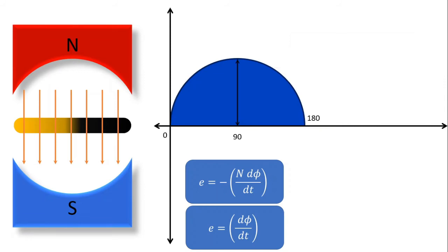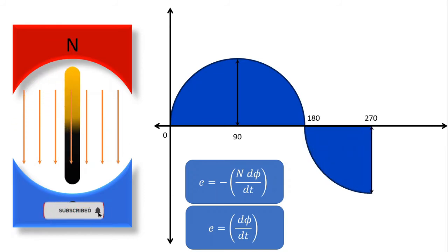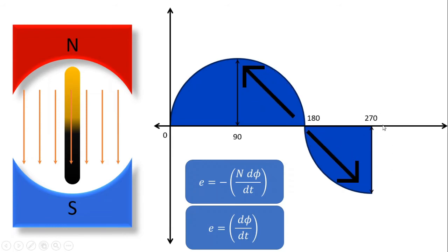Now if we shift the conductor further, when it reaches the next position its velocity again becomes perpendicular to the magnetic lines of force, and the induced EMF is again maximum. But what is the difference between the induced EMF at 270 degrees and the induced EMF at 90 degrees? The difference is the position of this conductor — it has shifted 180 degrees.